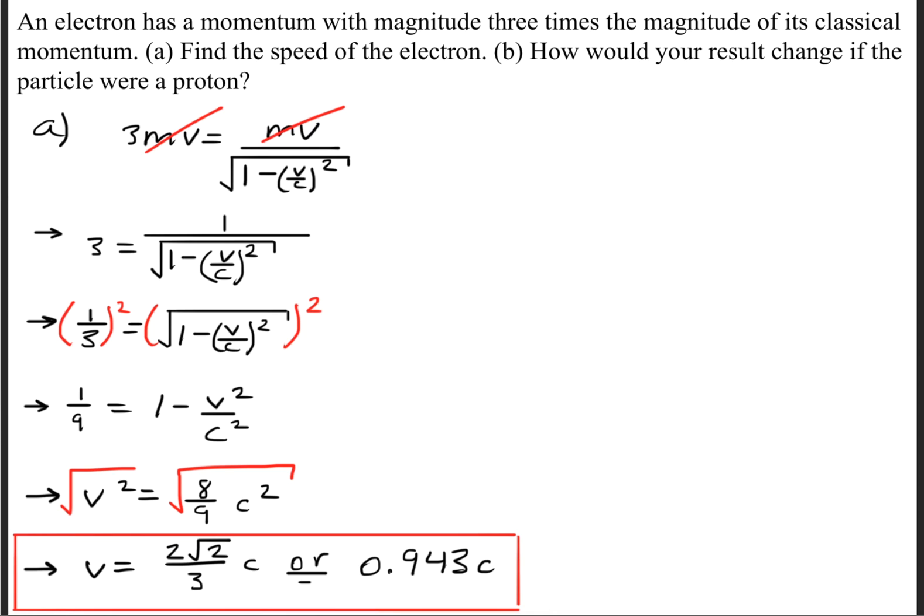Now part B asks how would your result change if the particle were a proton? Nowhere in this expression does it matter whether you have an electron or a proton because some major differences between the electron and the proton is the mass, but the mass cancels out on both sides of the equation. So if this were a proton none of the calculations would change, so the result would stay consistent, it would stay the same. The answer for part B is that the result is the same.